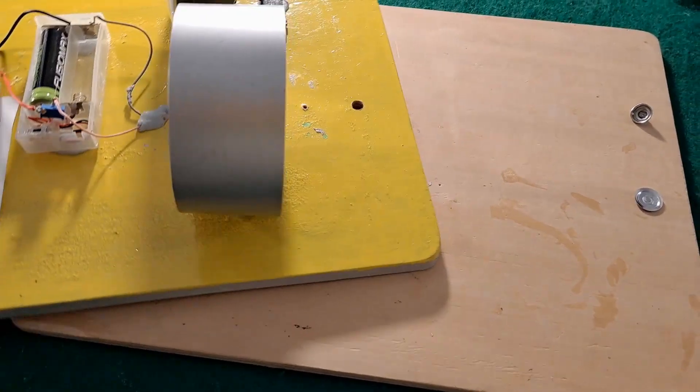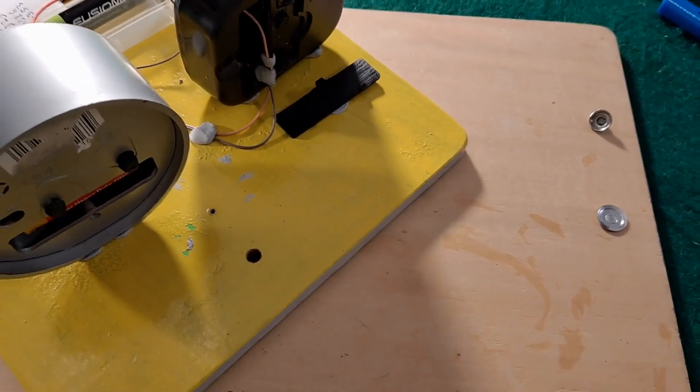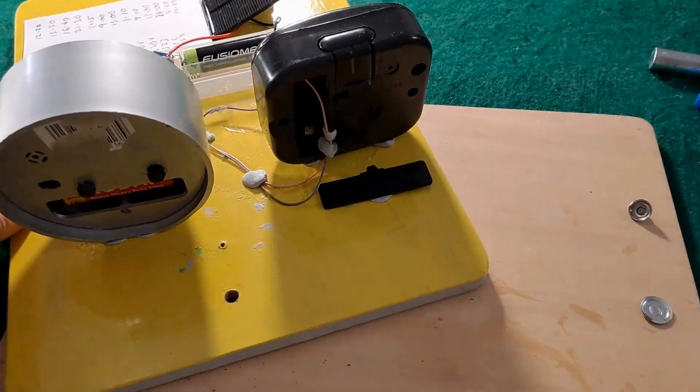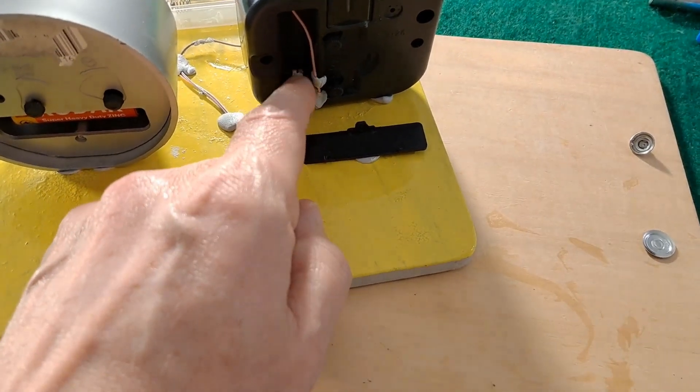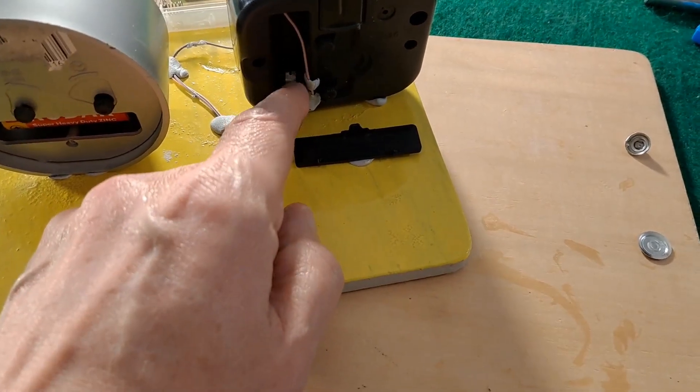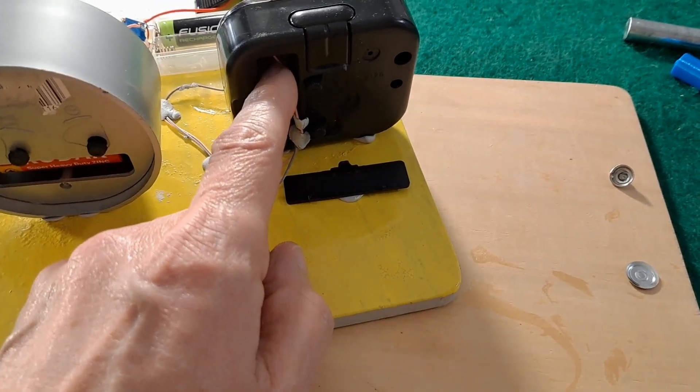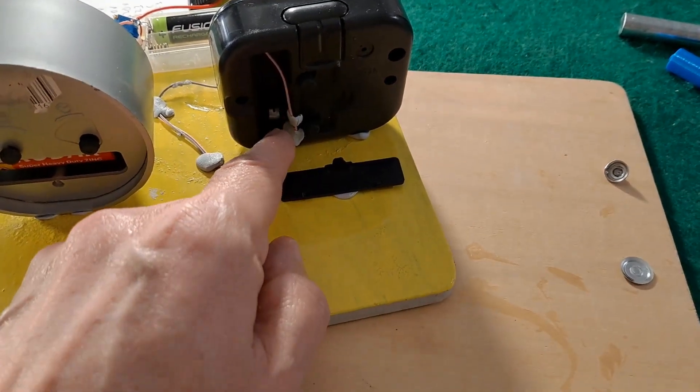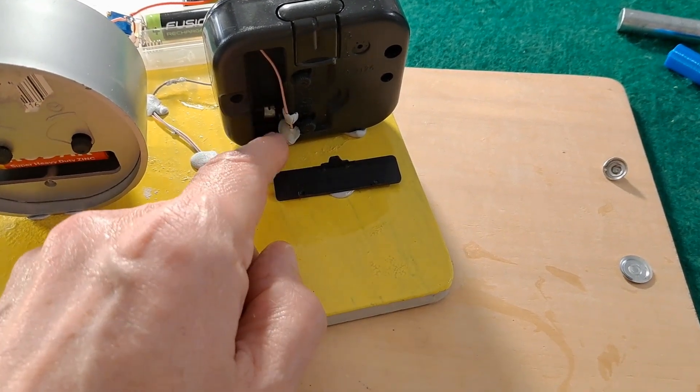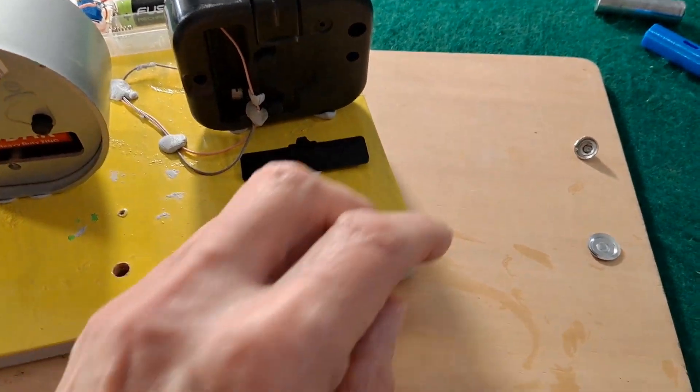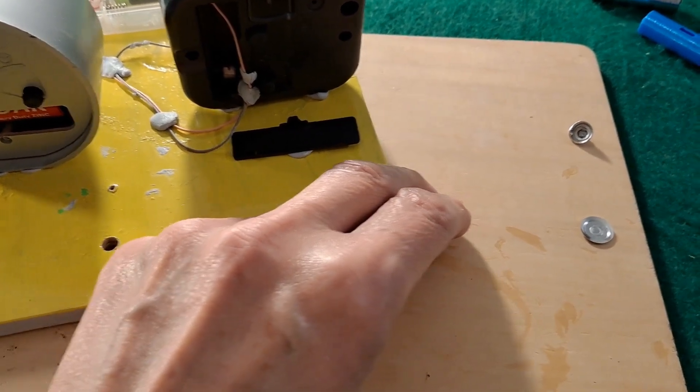But it did occur to me it would be nice if I could make a dummy battery to fit in the back of here to make the connections easier. Because I've had to twist the wires around the tags because they must be stainless steel or something. They won't take solder. I can't solder directly to them. So I thought, why don't I try and make a dummy battery?